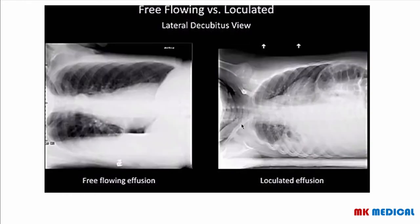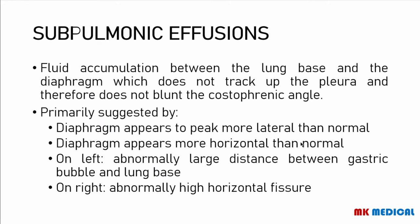Here is an example of free-flowing as well as loculated effusion in a lateral decubitus position. You can see that the fluid is flowing and distributing all over the zones of the lung in the free-flowing case, while in the loculated case it is still limited to one area. Sometimes you may have a sub-pulmonic effusion — this is accumulation of fluid between the lung base and the diaphragm, not tracking up the pleura and therefore not causing blunting of the costophrenic angle.